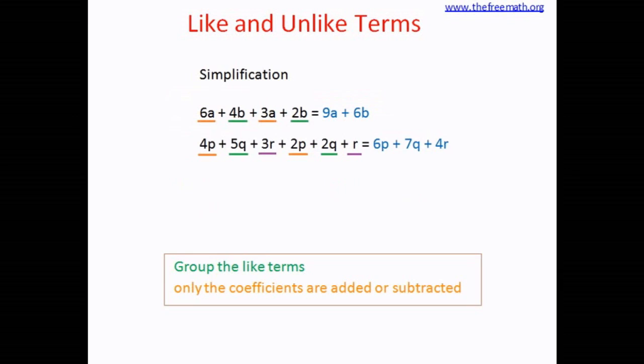So far we have only added the coefficients and we haven't done any subtraction because both the algebraic expressions that we have simplified had only plus signs. Now let's look at the next example: 7x minus 3y minus 2x plus 10y. Let's mark the like terms.